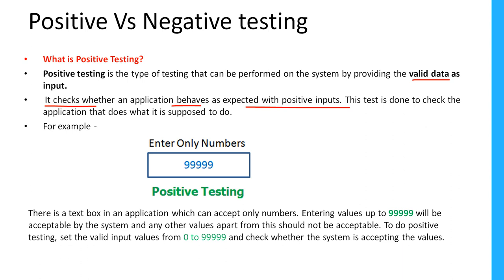This test is done to check that the application does what it is supposed to do. For example, here is a text box that allows only numbers. If I provide values from 0 to 99999, giving any number within this range should be allowed — that is called positive testing.